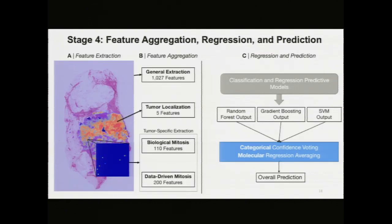Here is essentially a summary of what we've done. Figure A again represents the tumor heat map, and we extract four different types of attributes: general extraction, tumor localization, and biological and data-driven mitosis features. We can then pipe these through both classification and regression models for identifying the tumor severity class on a scale of one to three and predicting the molecular proliferation scores. For categorical classification, a voting classifier was applied whereby the class predicted with the highest frequency across all models was selected. For molecular prediction, all results were averaged to obtain a centralized final output.